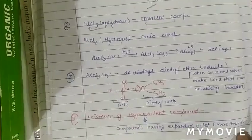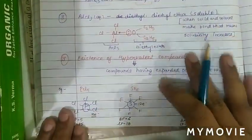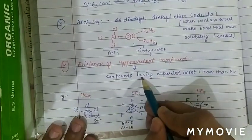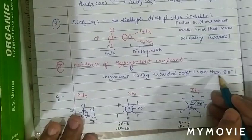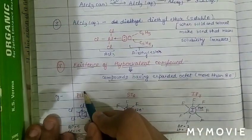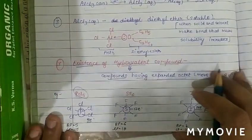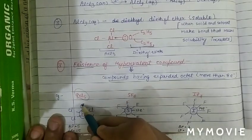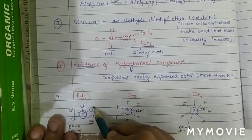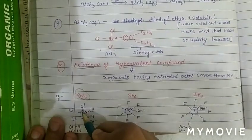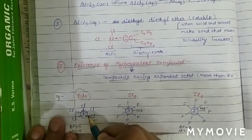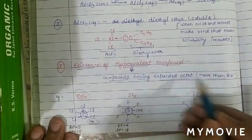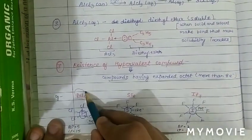Next, the existence of hypervalent compounds is also not explained in Lewis theory. Hypervalent compounds have an expanded octet — more than eight electrons around the central atom. For example, in PCl5 phosphorus is the central atom. All chlorine atoms have complete octets, but phosphorus has ten electrons, meaning an expanded octet.